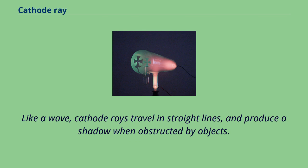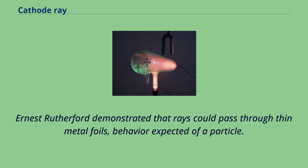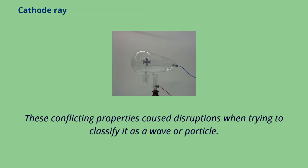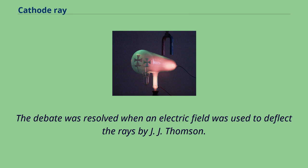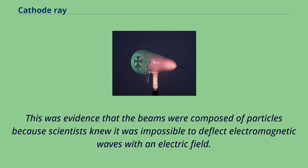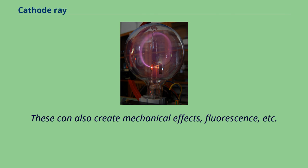Like a wave, cathode rays travel in straight lines and produce a shadow when obstructed by objects. Ernest Rutherford demonstrated that rays could pass through thin metal foils, behavior expected of a particle. These conflicting properties caused disruptions when trying to classify it as a wave or particle. Crookes insisted it was a particle, while Hertz maintained it was a wave. The debate was resolved when an electric field was used to deflect the rays by J.J. Thompson. This was evidence that the beams were composed of particles because scientists knew it was impossible to deflect electromagnetic waves with an electric field. These can also create mechanical effects, fluorescence, etc.